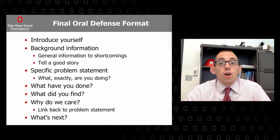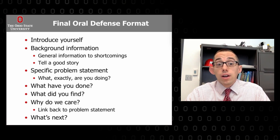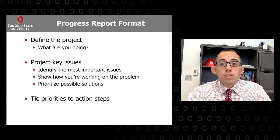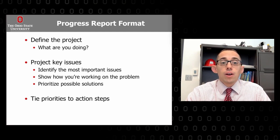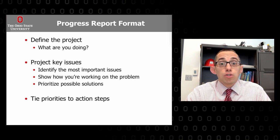For a final defense — undergrad oral defense, master's thesis, PhD thesis — you might introduce yourself, give general background, state the problem, what you've done, what you defined, why we care, and what's next. A progress report, like in a senior capstone design project, might require you to redefine the project, identify key issues, describe how you're working on them, propose potential solutions, prioritize the next steps, solicit feedback, and always tie your priorities back to your action steps to ensure alignment with the general goals.